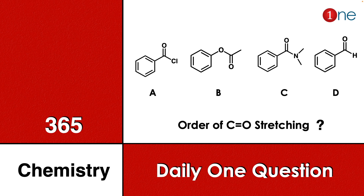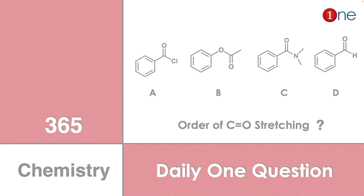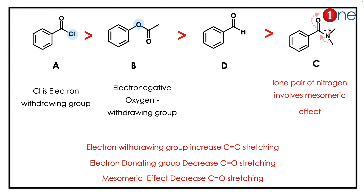Welcome to One Chemistry. This is the 365 Chemistry Series — daily one question for you. Here you have to find the CO stretching frequency order and arrange by stretching frequency. A is the acid chloride, B is the ester, C is the amide, and D is the aldehyde.